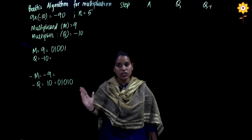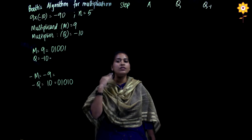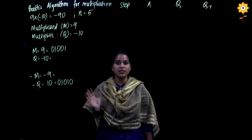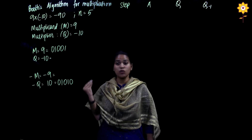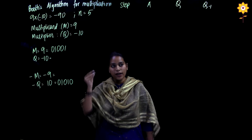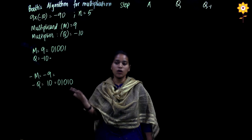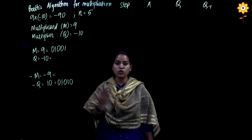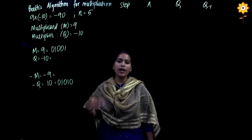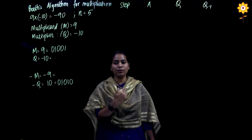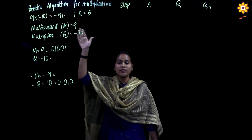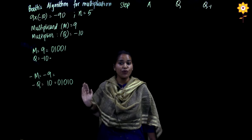Since the size of the register is 5 bits, the number of steps we are going to do is 5 steps. We check q0 and q minus 1, and whatever combination we have in q0 and q minus 1, we do the respective operation, then perform an arithmetic right shift, and go to the next step. This has to be done 5 times because n is equal to 5.